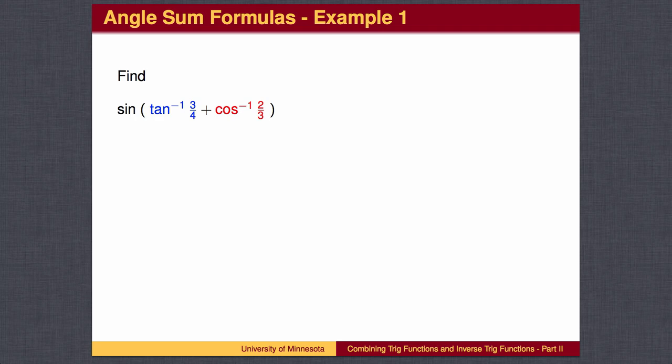The blue object is the angle whose tangent is 3/4. I'll repeat, the blue object is an angle. The red object is the angle whose cosine is 2/3. Again, the red object is an angle. So we are asked to find the sine of angle plus angle.